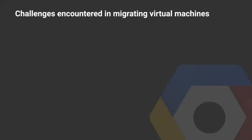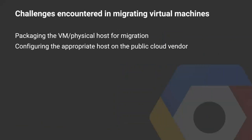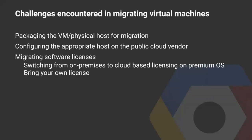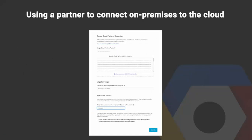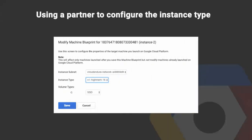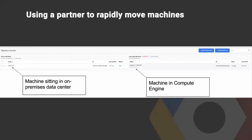The challenges encountered in migrating virtual machines include packaging up the virtual machine or physical host for migration, configuring the appropriate host on the public cloud vendor, migrating software licenses — switching from on-premises to cloud-based licensing or bringing your own license — standing up the network configuration, and doing this all in a timely manner to ensure business continuity. Screenshots from our partner CloudEndure show how one connects their migration tool to a cloud instance, configures the application instance including selecting instance size, and finally how an agent deployed on-premises causes the machine to appear in the cloud.